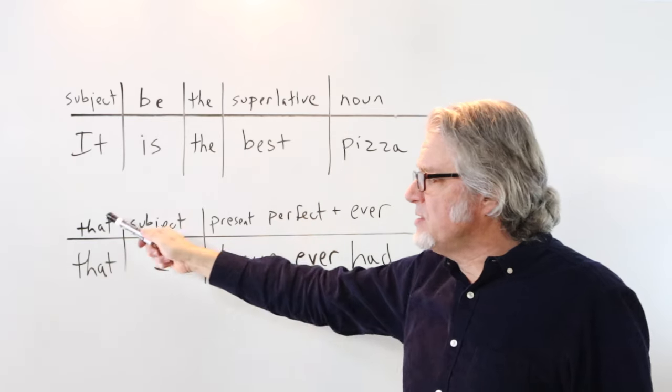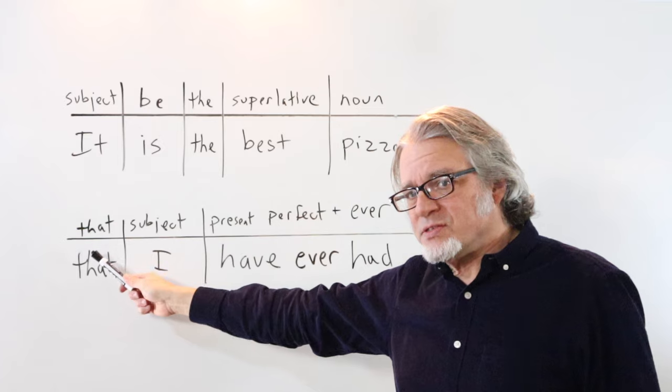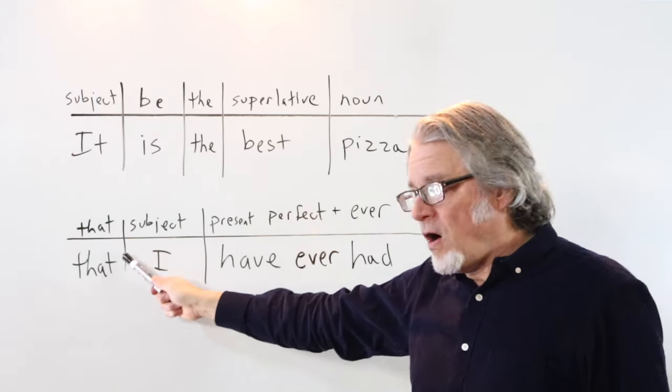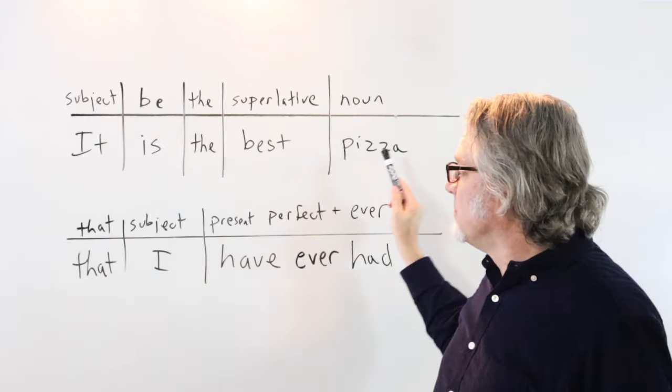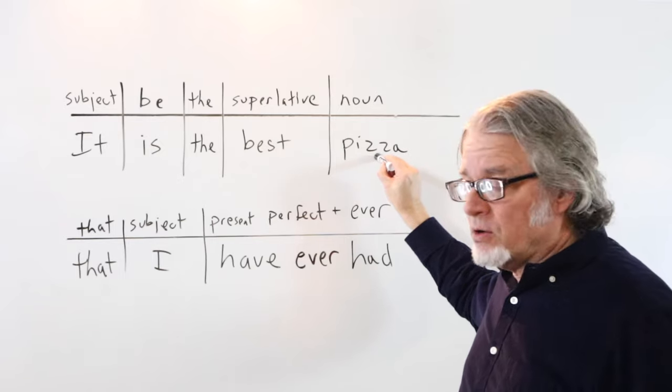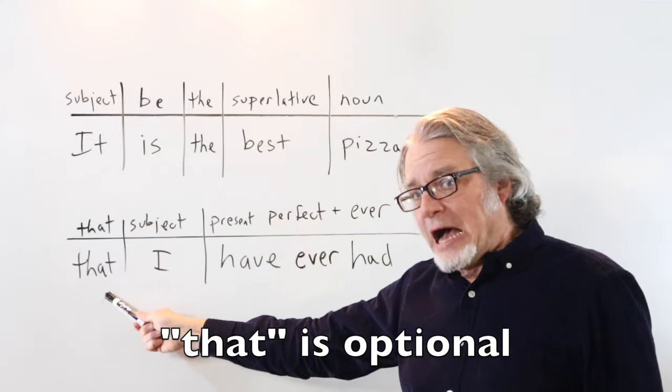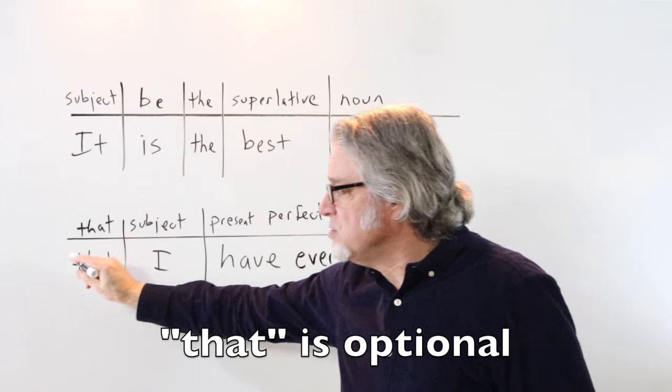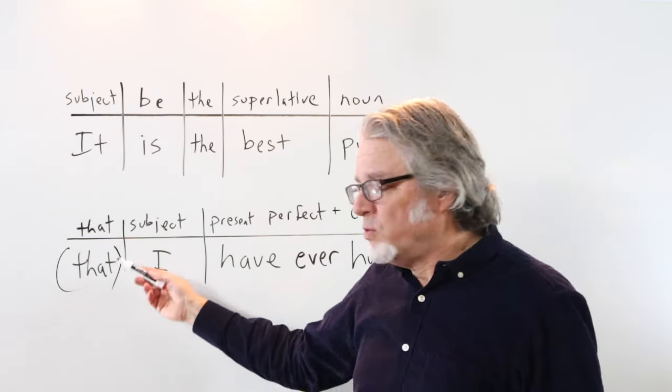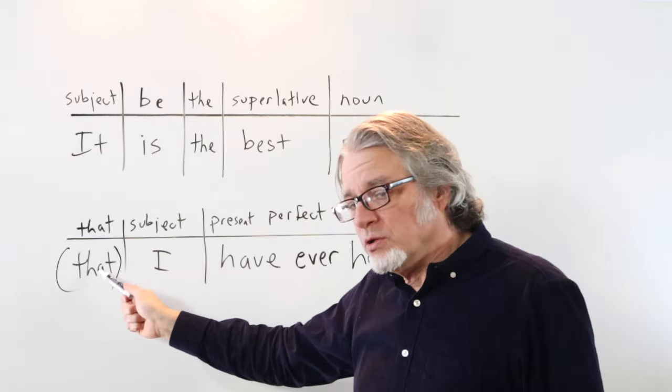And this is another part of the sentence. This is a clause which refers back to this noun. That is optional. You don't have to use this, but it's good when practicing to include that.